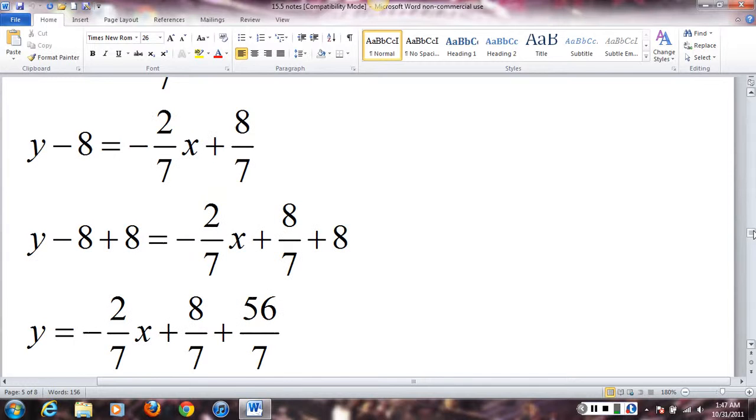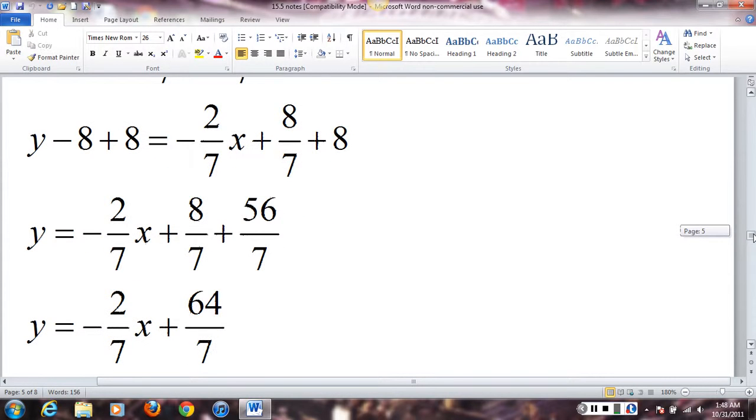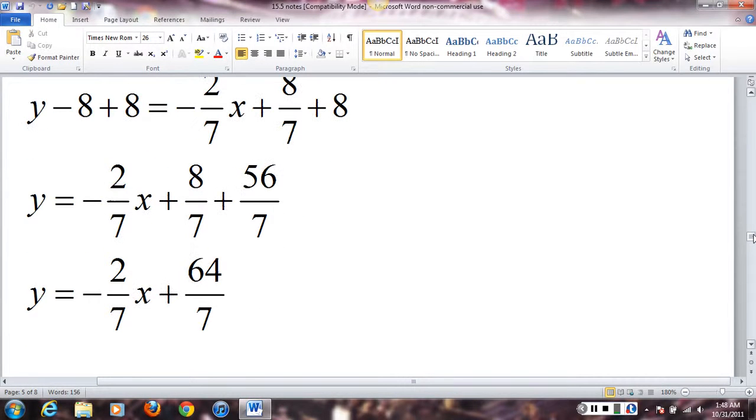Solve for y. Now, I'll add 8 to both sides. And I'm going to add 8 and 8/7, since they are like terms, I'll need a common denominator. We think of 8 as 8/1, and I'll make that 56/7, multiply the numerator and denominator by 7, combine my like terms, and I'll get 64/7, and that would be my final answer.